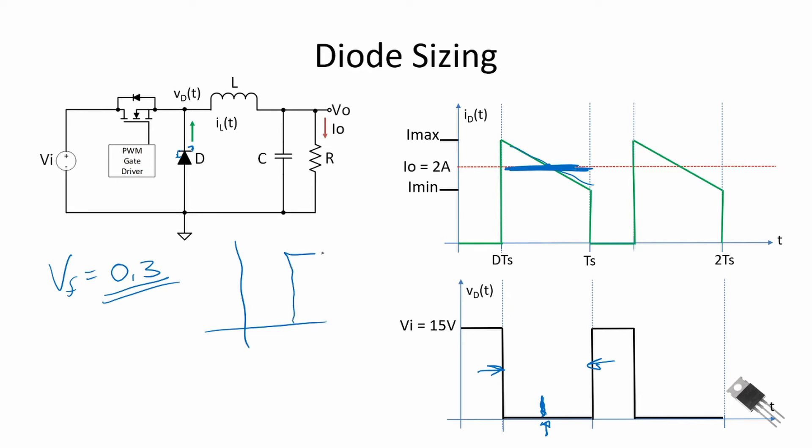We see that we have an instantaneous power of 2 amps times 0.3 volts, and it has a duration over this switching period. That duration is (1-d) times Ts. So our average power associated with the diode is equal to 2 amps times 0.3 volts all times 0.667, which is the duration of this period or two-thirds. When we run the numbers on this one, we see that this is equal to 400 milliwatts.